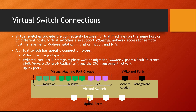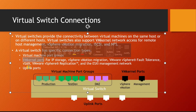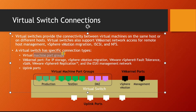The standard switch provides network connectivity between virtual machines. A standard switch has specific connection types: virtual machine port groups, VM kernel ports, and uplink ports. Uplink ports are the ports connected to the physical network. For virtual machine port groups, you can have a maximum of 1016 active ports per host.